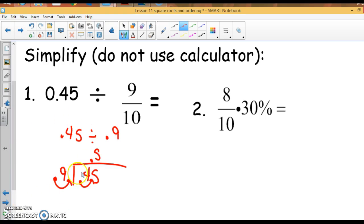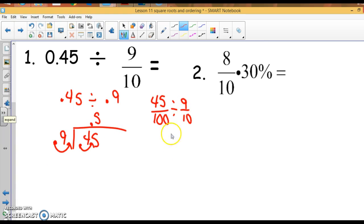The other way you could do this problem is change them both to fractions. So, 0.45 divided by 9 tenths. Well, now it's dividing fractions. We change it to multiply by the reciprocal. First of all, I can reduce this first fraction by dividing by 5. So, I'll have 9 tenths times, flip it, 10 ninths. Keep, switch, flip. Change it to multiply by the reciprocal. 9 goes into 9, 10 into 10. When I multiply straight across, I get one half.